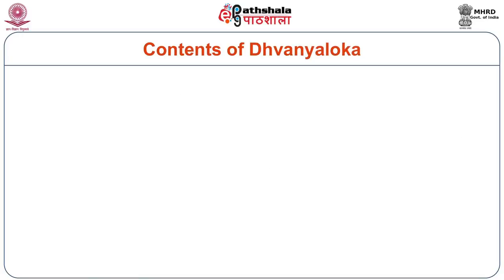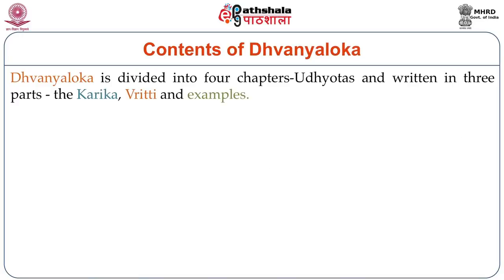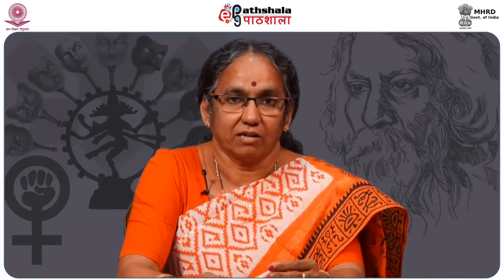The contents of Dhvanyaloka: it is divided into four chapters called Udyotas, and the whole text is written in three parts — Karika, Vrtti, and examples. Karika is like the formula, a statement. Vrtti is the explanation of the Karika. In some places the Vrtti is very elaborate. Examples are mostly taken from Gatha Saptashati — Prakrit verses — and some from his own texts and from great poets.